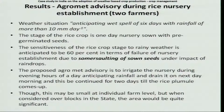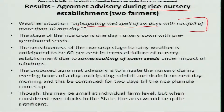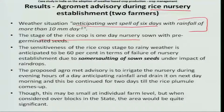Here we have taken rice nursery — Farmer A and Farmer B. The weather situation studied was anticipating a wet spell of 6 days with rainfall of more than 10 millimetres per day, giving 60 millimetres over the forecast period. The crop stage was seeds just sown in the nursery — 1 day old. With 60 mm of rainfall, the germination and nursery would get affected. The sensitivity of the rice crop at the sown stage to this rainy weather is 60% in terms of failure of the nursery.